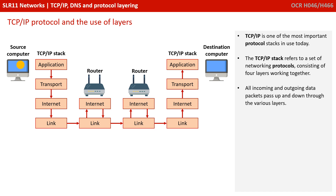TCP/IP is one of the most important protocol stacks in use today. The TCP/IP stack refers to a set of networking protocols consisting of four layers working together. All incoming and outgoing data packets pass up and down through the various layers of the TCP/IP protocol stack.